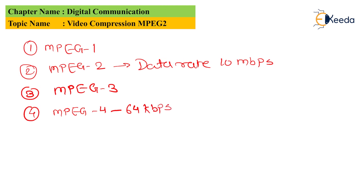So there are four different standards: MPEG-1, 2, 3, and 4. Out of these, MPEG-2 provides the highest data rate of 10 Mbps, and MPEG-4 provides a slow data rate of 64 Kbps.